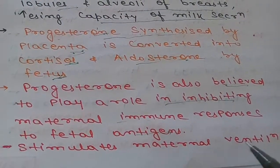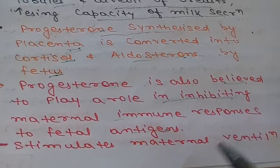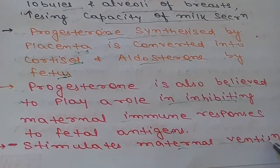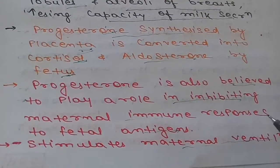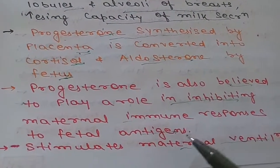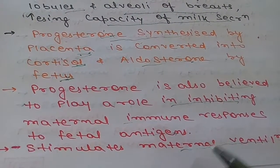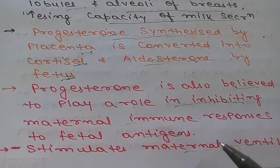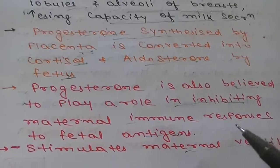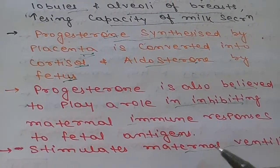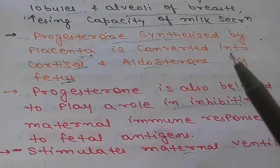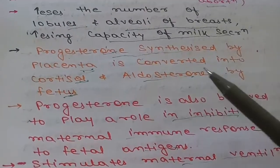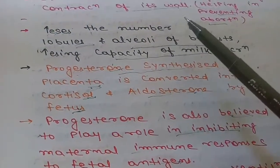The fifth function is that progesterone stimulates maternal ventilation to remove the excess CO2 produced during pregnancy. By increasing ventilation it also has some effect on thermogenesis — progesterone is basically considered a thermogenic hormone.